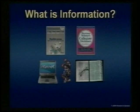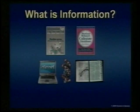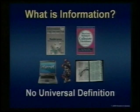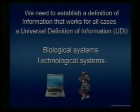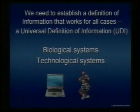So what is information then? We read dictionaries. We use it on the internet, on our computers. We have it in our DNA. We have it in the Bible. But there's no universal definition — isn't that something? There's not a single universal definition of information anywhere. Not one dictionary I've read actually defines information; they describe it, but they don't define it. That's quite amazing. Our entire society and businesses thrive on information, but they can't define what it is. So what we need to do is establish a definition of information that works in all cases — a universal definition that works in all biological and technological systems.